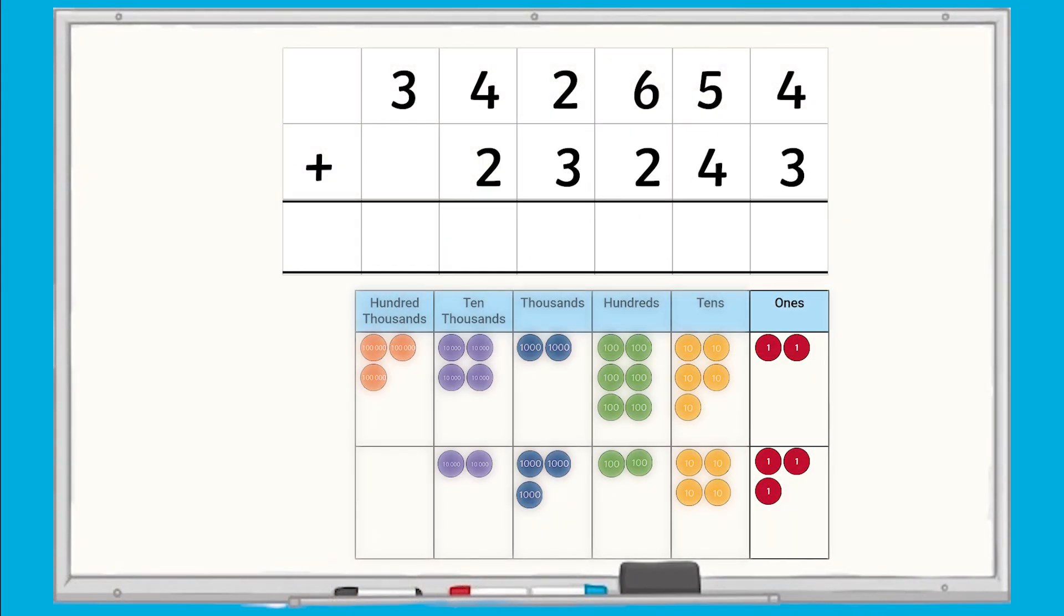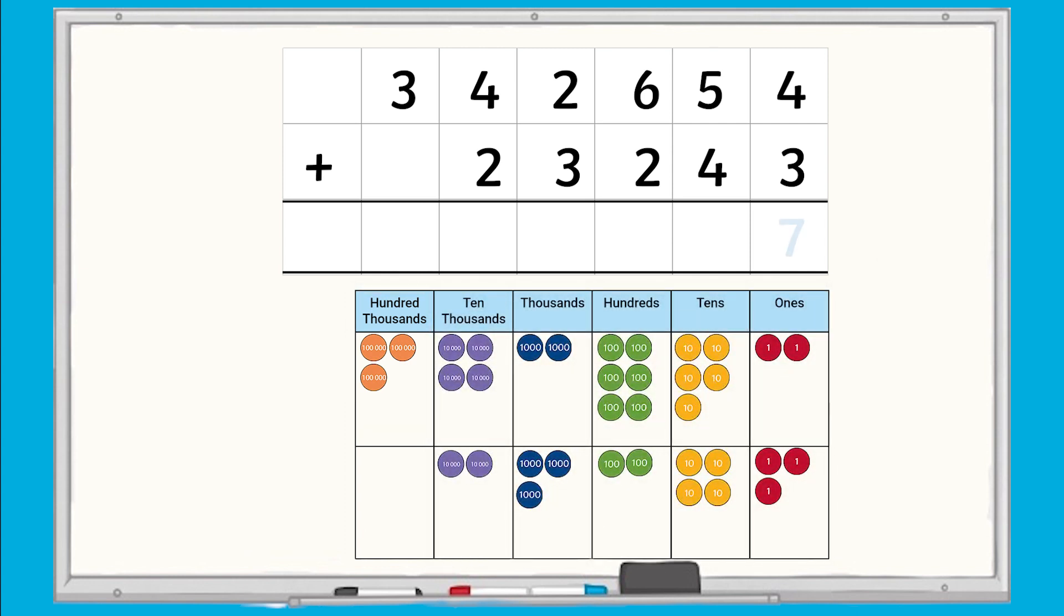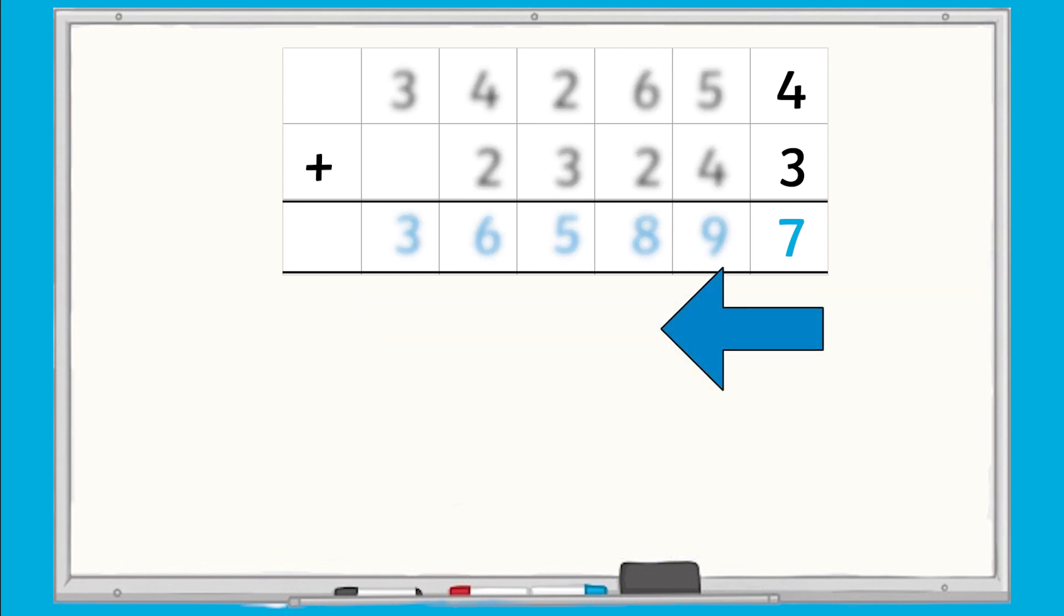In the same way that we found the total number of counters in each column, we can find the total of each column by adding the digits together. When you're using column addition, always start in the column on the right, which is the ones column here. That will become more important when we move on to column addition with regrouping.